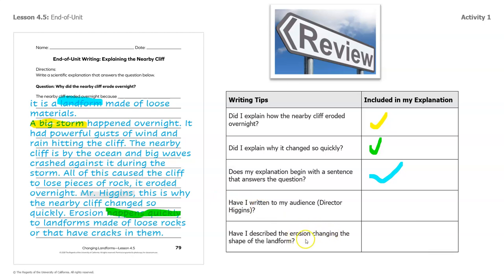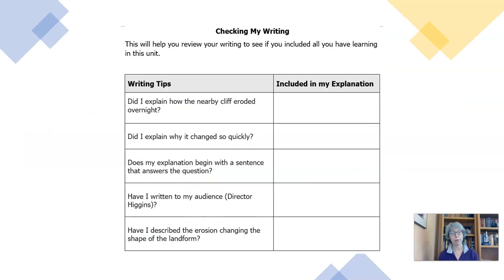And is there a description of the erosion changing the shape of the landform? Let's see — all of this caused the cliff to lose pieces of rock. Remember, as you are writing, make sure that you go through and see if you've included these pieces. Again, these are all helpful in writing your final explanation.